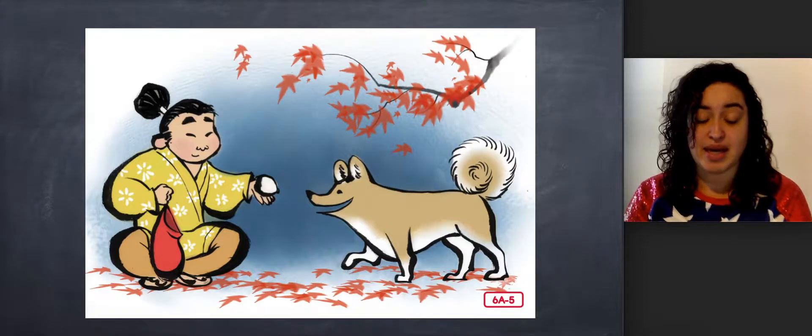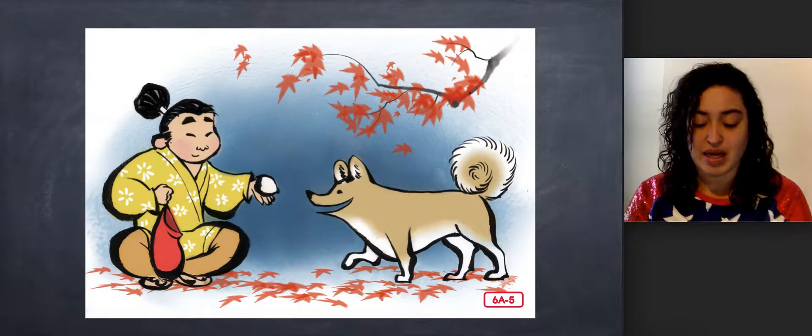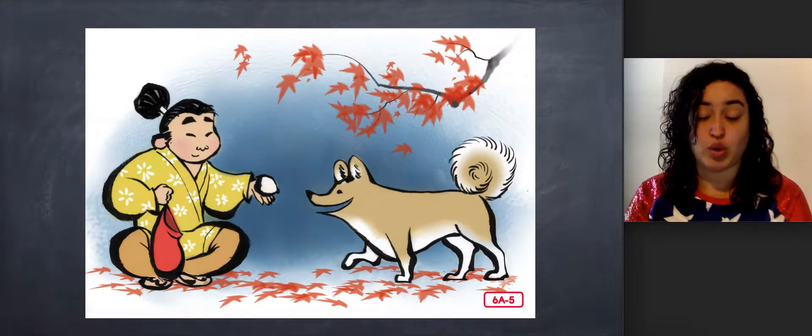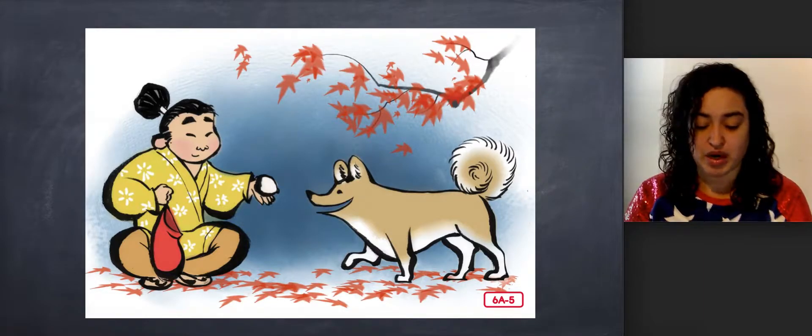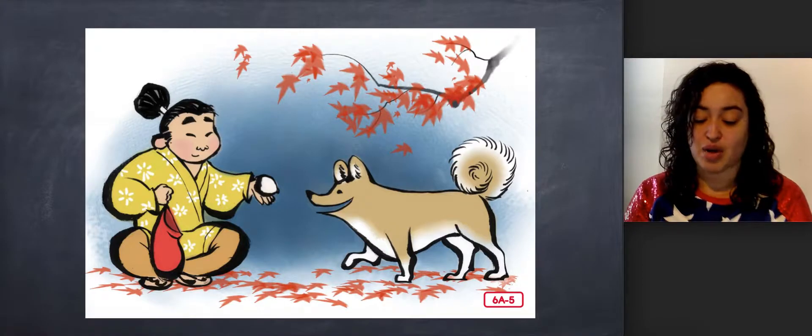They soon met a monkey. Where are you going, Momotaro? asked the monkey. I'm going to the island of the oni to bring back what they have stolen from my village, said Momotaro. I will come with you, said the monkey. And Momotaro thanked him and gave him a millet cake.